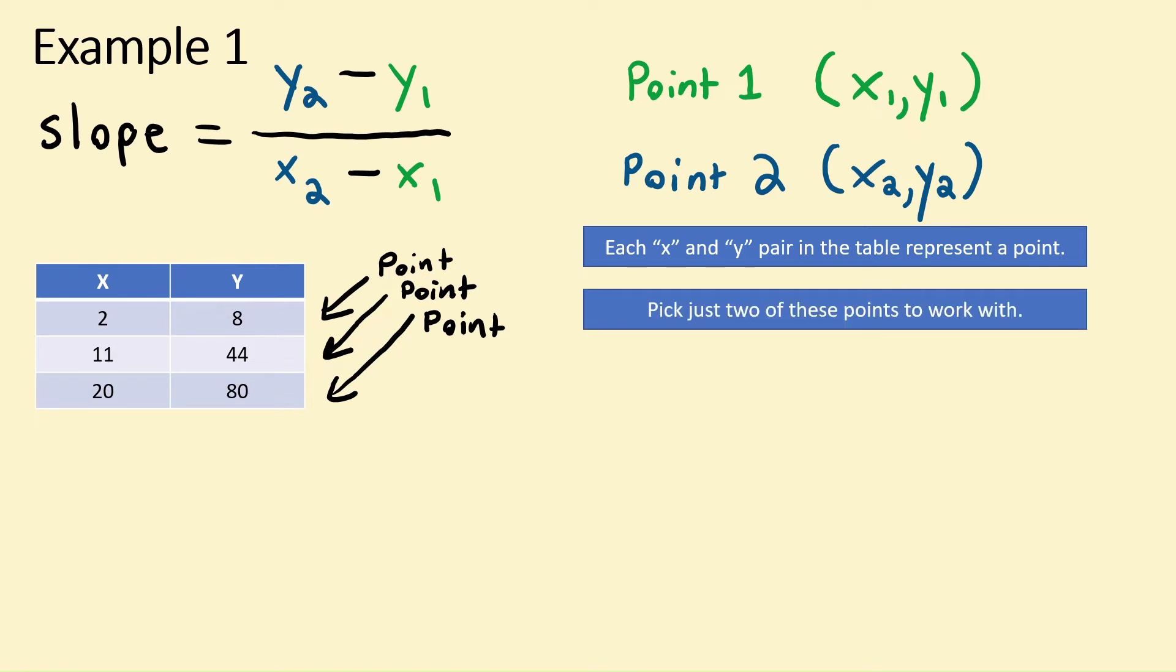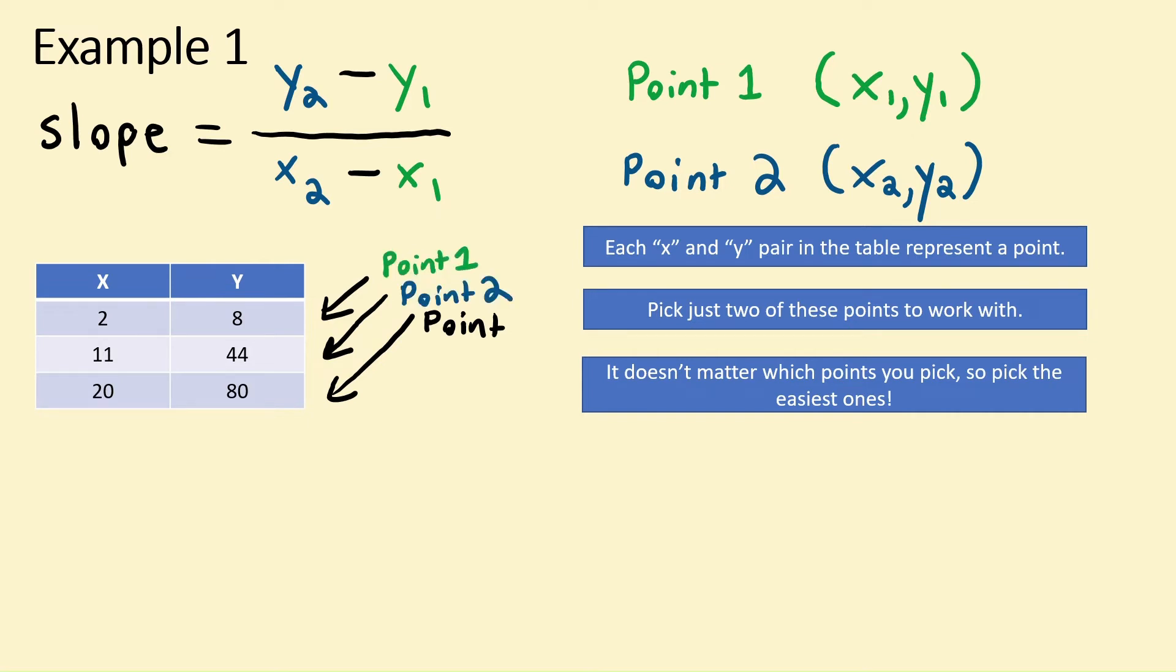You'll notice that we only need two points to make a formula work, not more than that. And since it really doesn't matter which two points you use, always make sure to use the easier ones. In this case, let's pick 2, 8 for our first point and 11, 44 for our second point. That's all we really need.